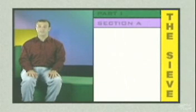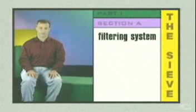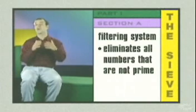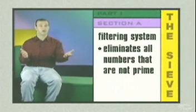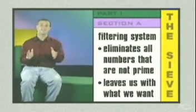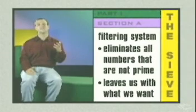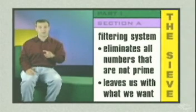Eratosthenes created a sieve. With his sieve, we can figure out all the prime numbers less than a certain designated number. The sieve is like a filtering system that eliminates all of the numbers that aren't prime and leaves us with the ones we want. Let's use the sieve to figure out all prime numbers less than 100.